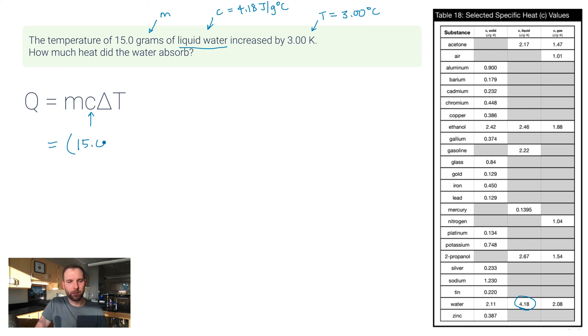It doesn't matter. So I have everything I need to solve for Q, so I just want to plug in what I know. 15.0 grams, this is the mass. 4.18 joules per gram degree Celsius is the specific heat of liquid water. And then delta T, it says increased by 3.00 degrees Celsius. So then I just calculated this: 15.0 times 4.18 times 3, that gives me 188.